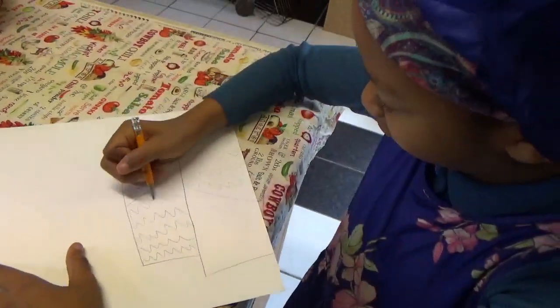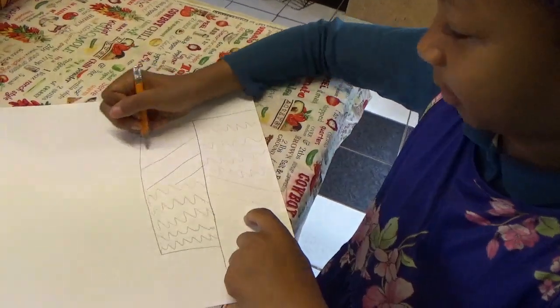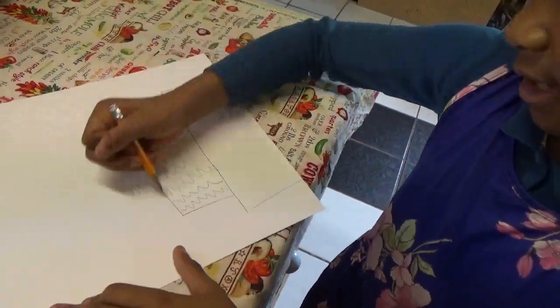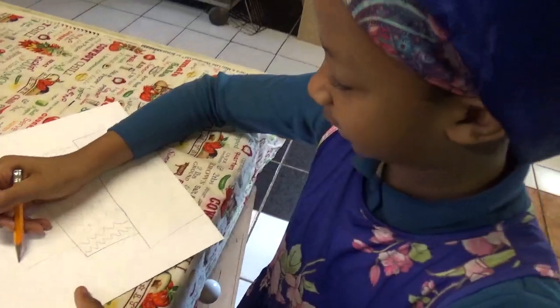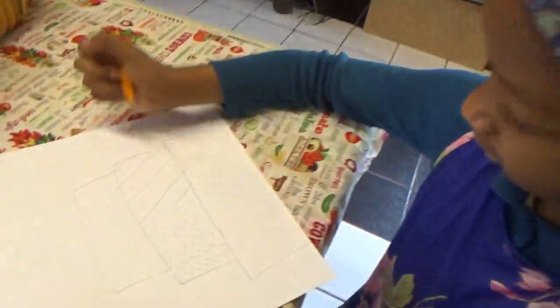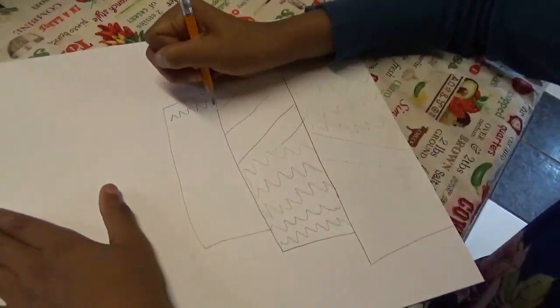After we do that, we just start to do one like that. After we do just like that, we're going to do another layer and zigzags on the same side.